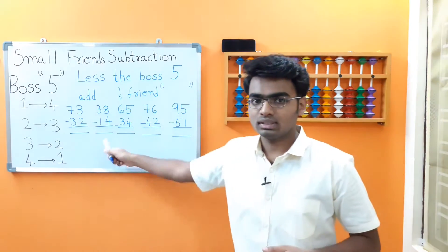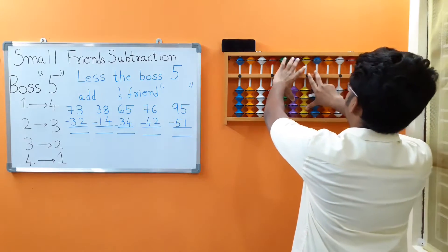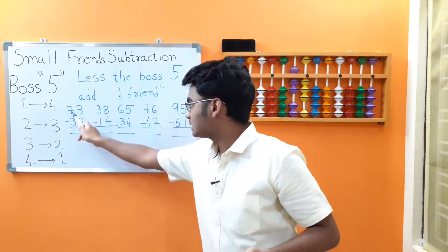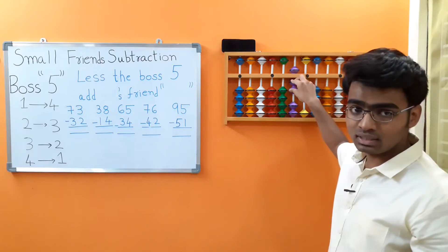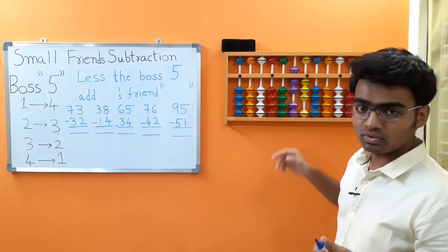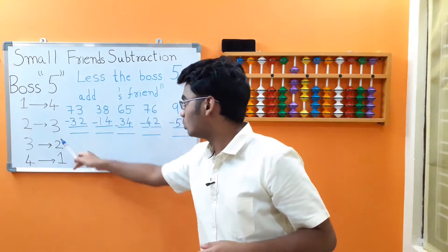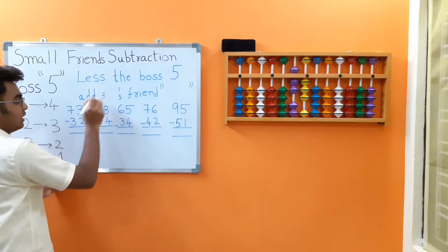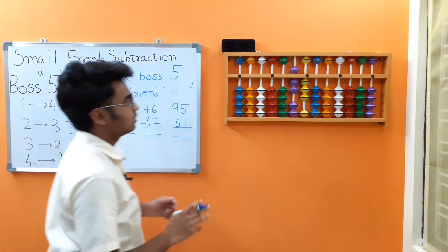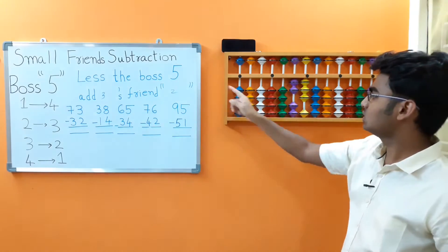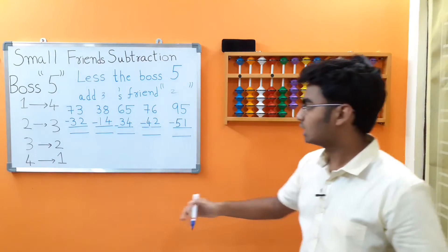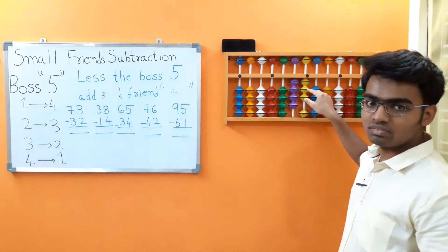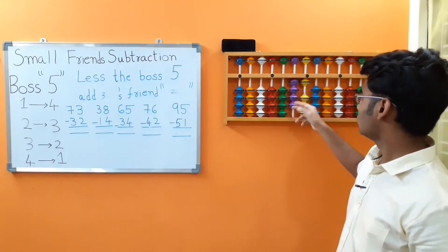Now 73 minus 32. Let's go one number at a time. 7 minus 3: we cannot subtract 3 because we only have 2 beads. Let's apply small friends — 3's friend is 2 — less the boss 5, add 3's friend 2. Next, 3 minus 2: we can subtract 2 directly because we have 3 beads. We got the answer as 41.